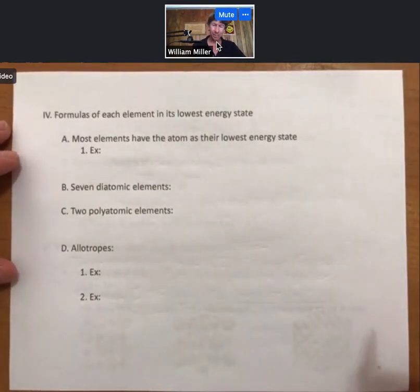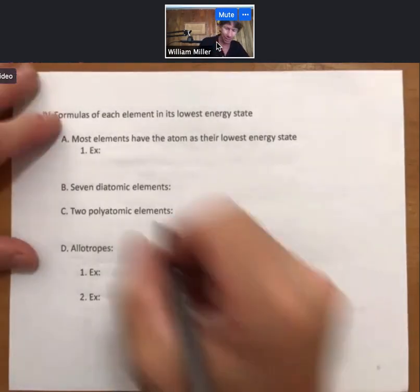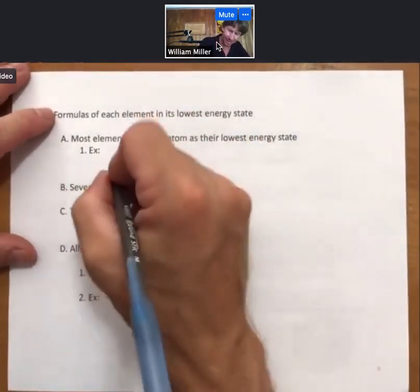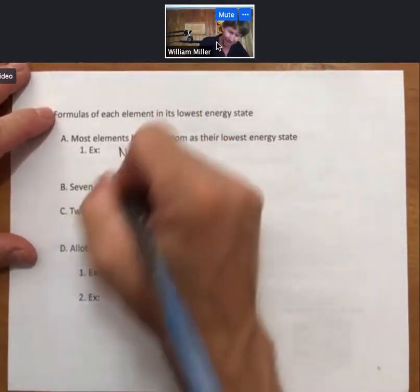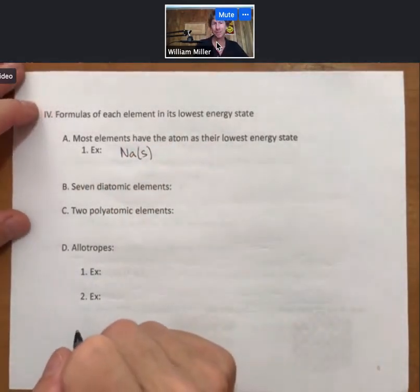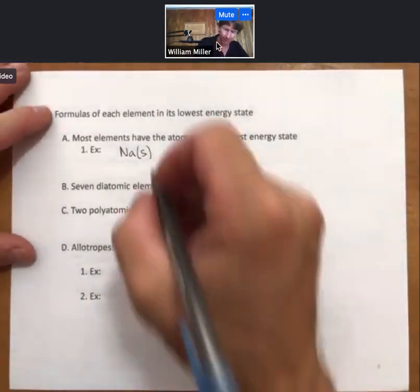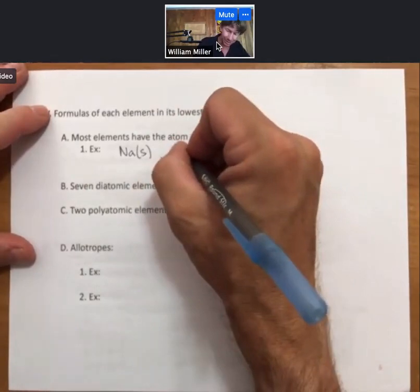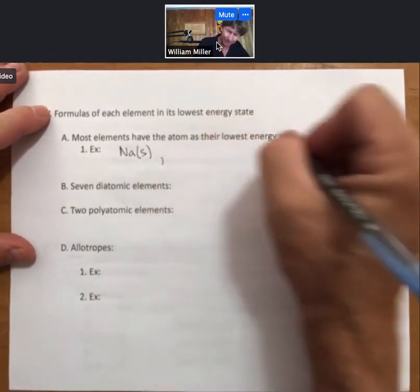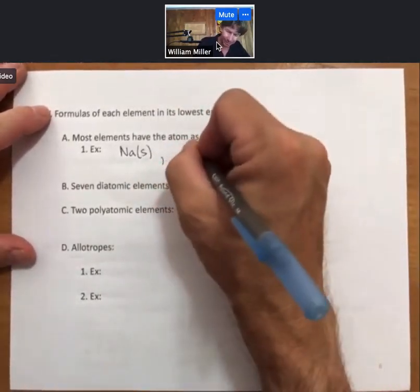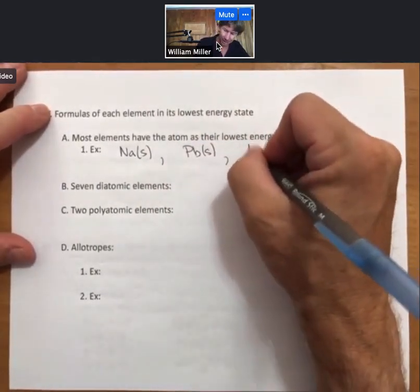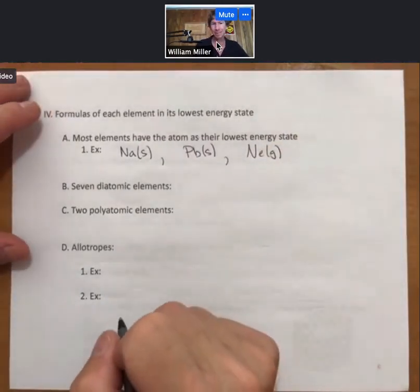Formulas for each element in its lowest energy state. Most elements have the atom as their lowest energy state. For example, if we look at sodium, it is an atom, and it is also a solid. Most atoms are like this. Lead also falls into this category. Neon, also an atom, but it's a gas. But there are seven diatomic elements, and it is important to know them. These elements show up as diatomic elements in chemical reactions.